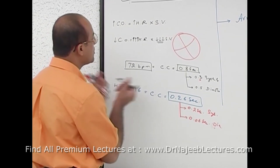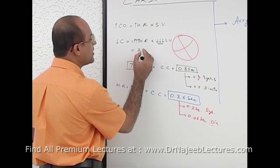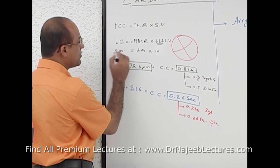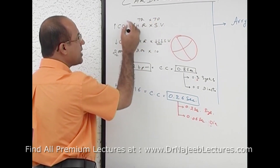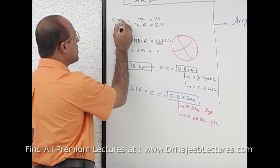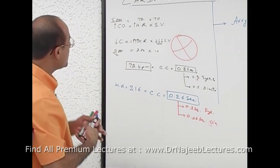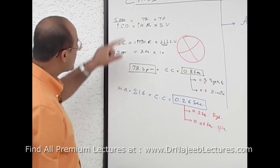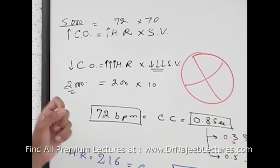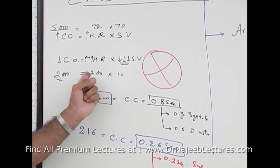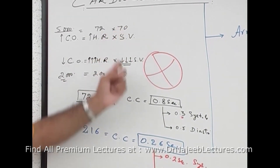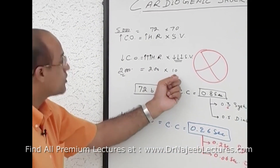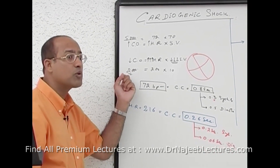For example, if heart rate is 200 and stroke volume is only 10 ml, total cardiac output is only 2000 ml. But normally at 72 beats per minute with a stroke volume of 70 ml, cardiac output is 5000 ml — 5 liters. So when heart rate is very fast at 200 and stroke volume has dropped from 70 to 10, the increase in heart rate does not compensate for the dangerous fall in stroke volume. Cardiac output is dangerously low and the person goes into cardiogenic shock.